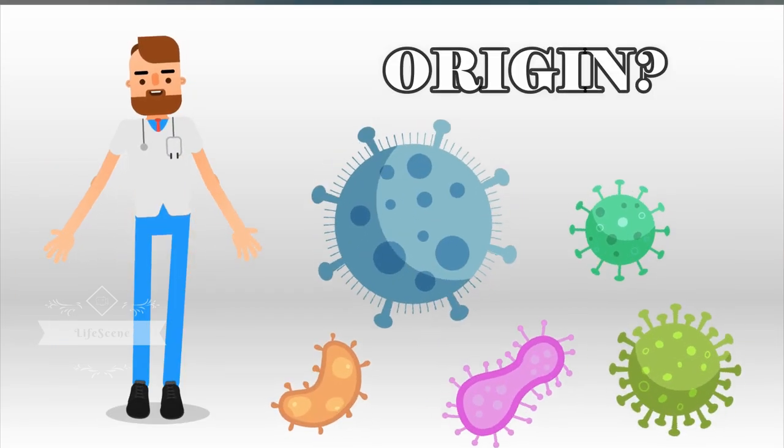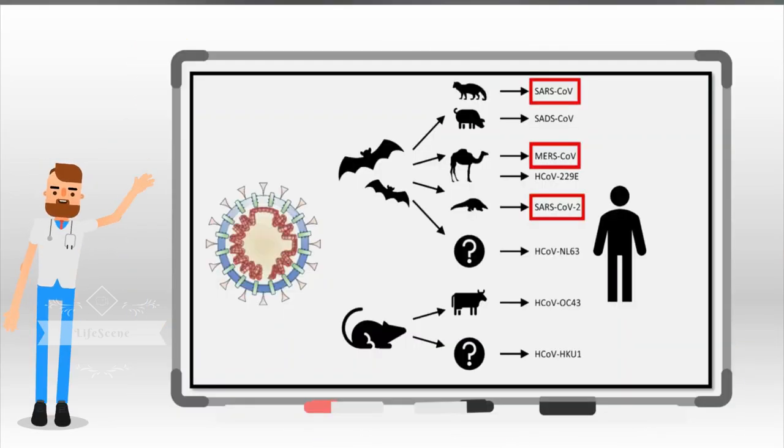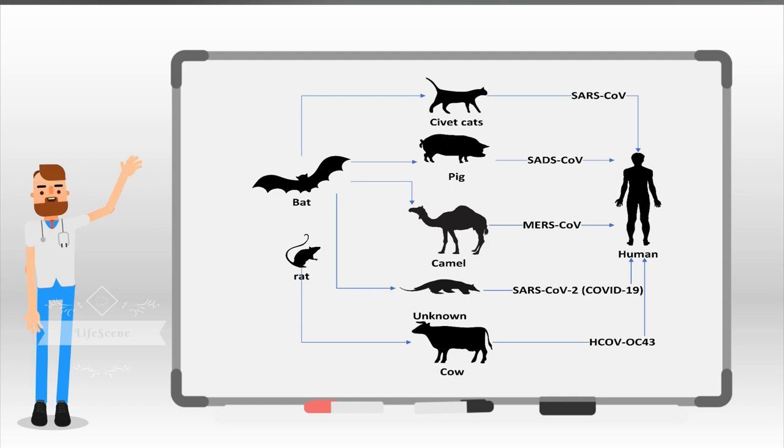So where did the virus really came from? It is known that coronaviruses circulate in a range of animals. Sometimes these viruses can make the jump from animals to humans. This is called a spillover and could be due to a range of factors.